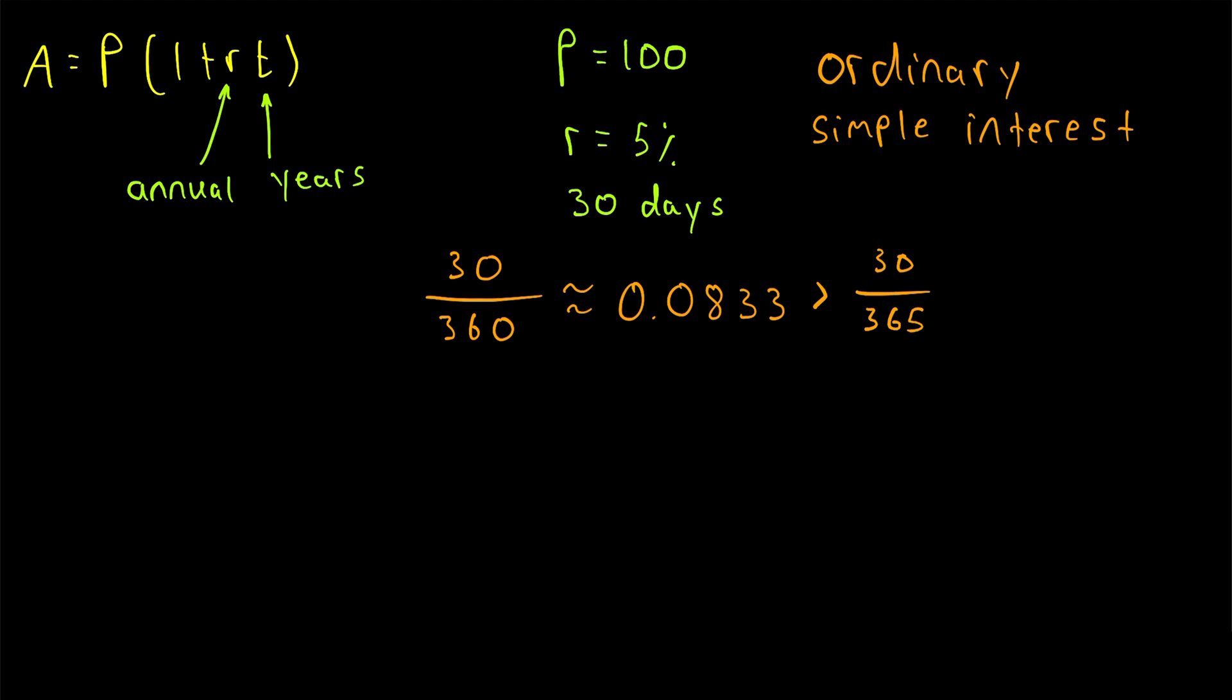This is, of course, because when we calculate with ordinary simple interest, we are dividing by a smaller number. Thus, T, the number of interest periods or time that has passed, will be greater, thus leading to more interest under ordinary simple interest.